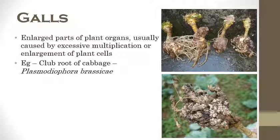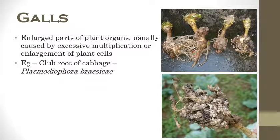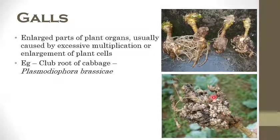Next are galls. The plant parts get abnormally enlarged, especially in the root region. The enlargement of plant parts is due to hypertrophy and hyperplasia, caused by the production of gibberellins and other hormones. Hypertrophy means abnormal enlargement of cells, while hyperplasia means increasing number of cell divisions. This leads to formation of galls and tumors. The best example is club root of cabbage which is caused by Plasmodiophora brassicae.